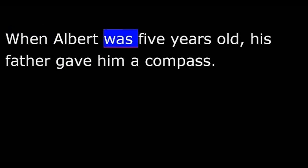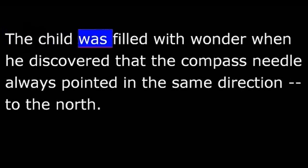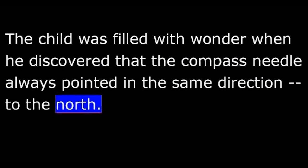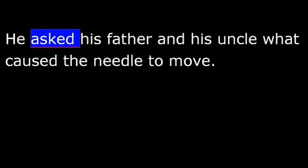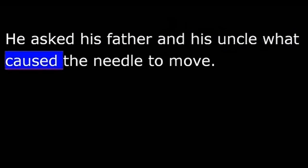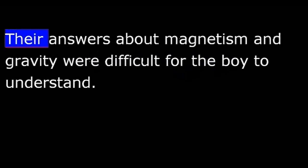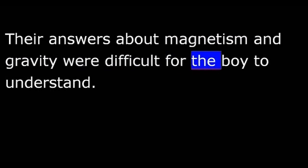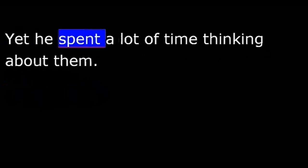When Albert was five years old, his father gave him a compass. The child was filled with wonder when he discovered that the compass needle always pointed in the same direction, to the north. He asked his father and his uncle what caused the needle to move. Their answers about magnetism and gravity were difficult for the boy to understand. Yet he spent a lot of time thinking about them. He said later that he felt something hidden had to be behind things.